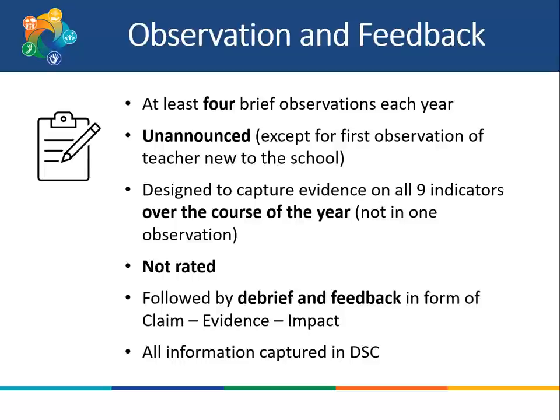Every teacher will have at least four brief observations each year. Observations are brief — about 15 minutes long. They are almost always unannounced, except for the first observation of a teacher new to the school. Observations are designed to capture evidence on all nine indicators over the course of the year; it is not necessary to capture evidence for each indicator during each observation. The descriptors under each indicator are used as a guide to capture and sort evidence. Observations are not rated. Instead, observations are followed by a debrief and feedback in the form of a claim evidence impact statement. All observation evidence will be collected in the DSC.